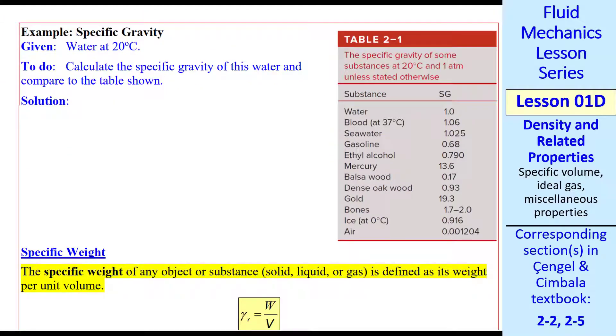Let's do a quick example. What's the specific gravity of water at 20 degrees C? You can look up the density of water at 20 degrees from the appendix or online. At 20 degrees and 1 atmosphere, the density is 998.0 kg per meter cubed.